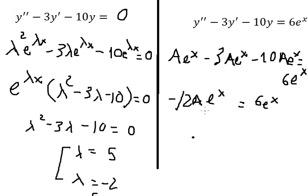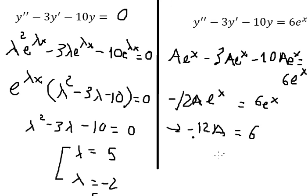Since we have the same e to the power of x throughout, we combine the coefficients to get negative 12A equal to six. Dividing both sides by negative 12, we get A equals negative one over two.